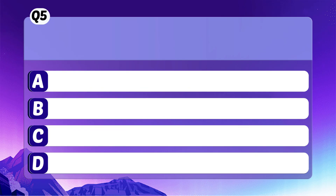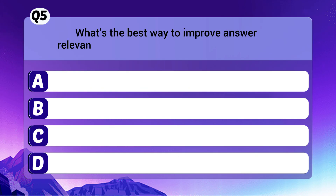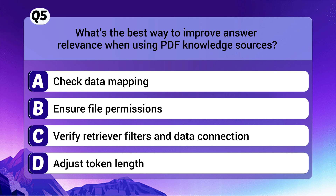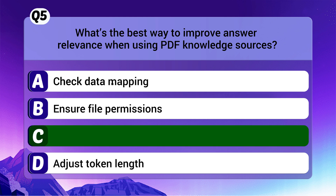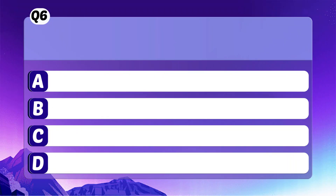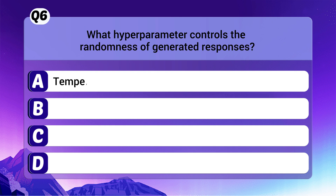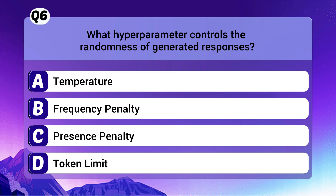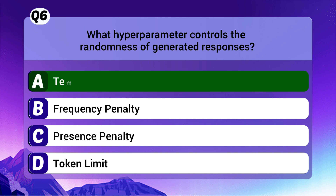Question 5: What's the best way to improve answer relevance when using PDF knowledge sources? The correct answer is C: Verify retriever filters in data connection. Question 6: What hyperparameter controls the randomness of generated responses? The correct answer is A: Temperature.